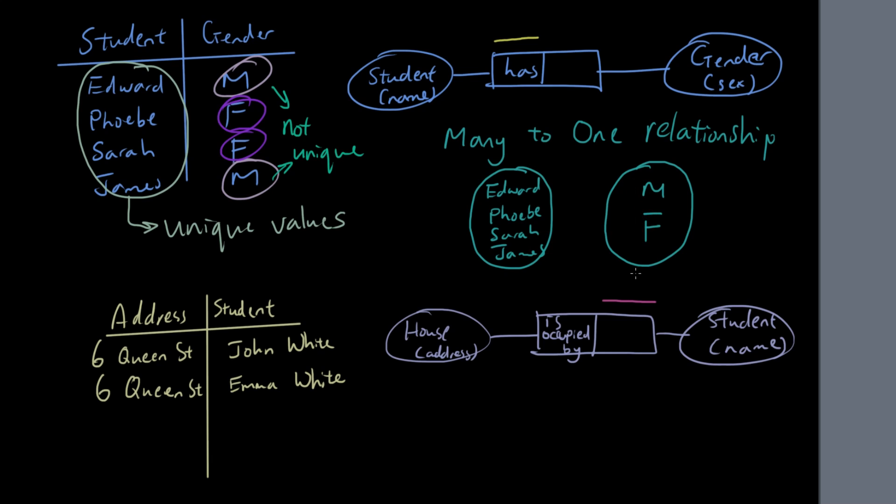There's only two things on the right, and you have Edward linking to male, Phoebe linking to female, Sarah linking to female, James linking to male, and so on. So many to one represents that there are many things on the left pointing to just one thing on the right. If you look at male, for example, there are many things pointing to one thing, and then if you look at females, there are many things pointing to one thing, so that's why this is called a many to one relationship.